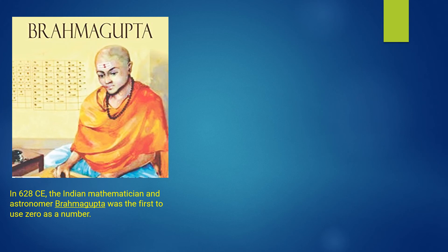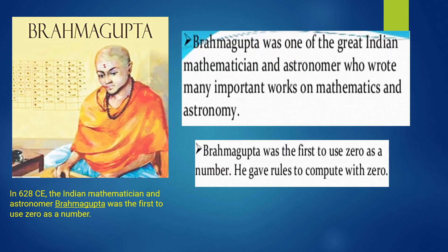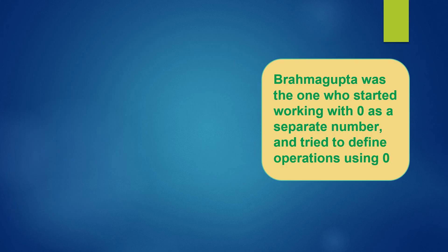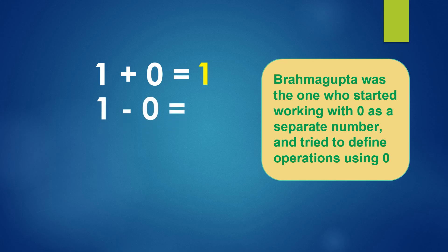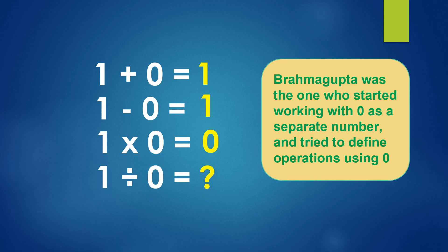Later, after Aryabhata, it is the great mathematician Brahmagupta who used zero as a number. He gave the rules to compute with zero and was the first mathematician to use zero as a separate number and tried to define operations using zero. The rules he gave: one plus zero is one; one minus zero is one; one multiplied by zero is zero. But for one divided by zero, he was not able to give a justification for this rule.